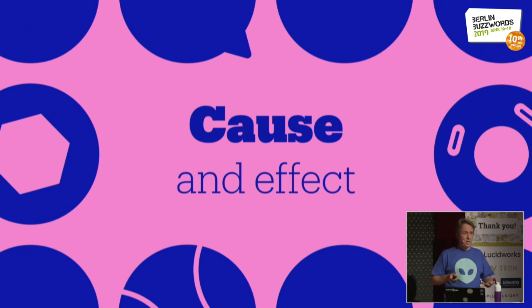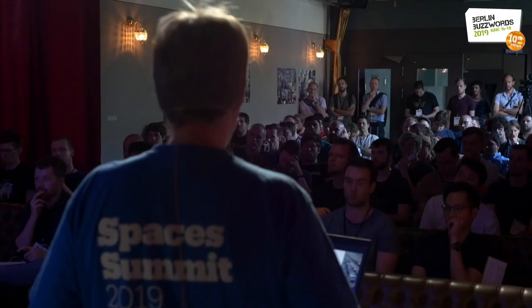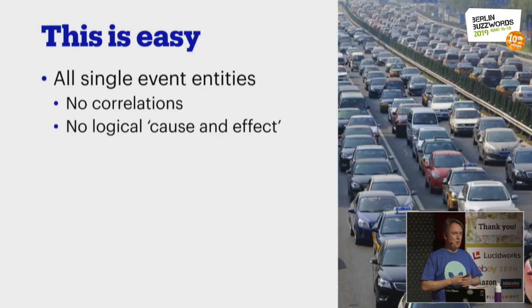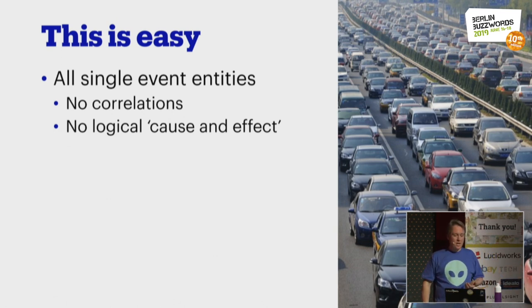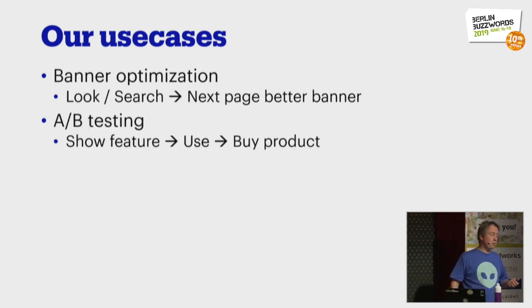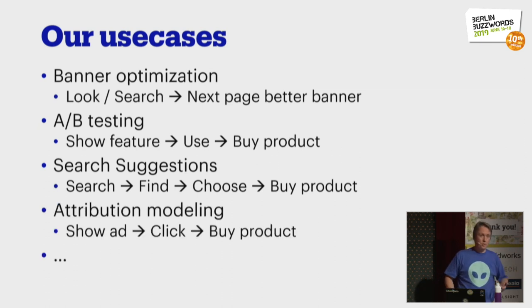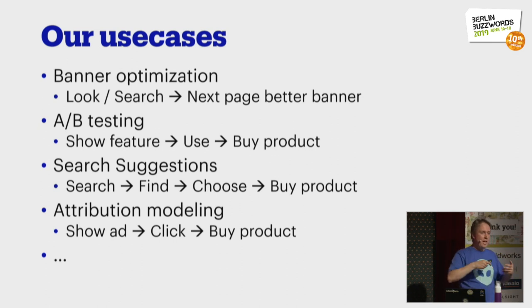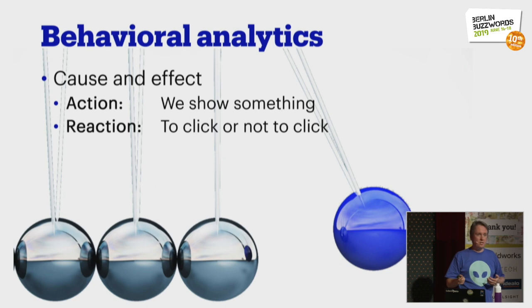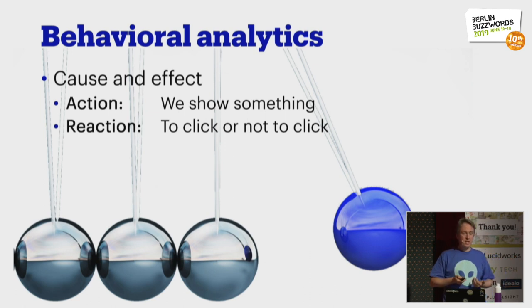Looking at the general pattern of what we want to do with the data: cause and effect. If all measurements are single independent unrelated things, processing is easy. But our use cases are things like banner optimization, A/B testing, search suggestions, or attribution modeling. In all of these cases, we do something, we show something, and then the user either responds or doesn't. It's always a cause and effect — an action and a reaction — and it's that causality we're really interested in.